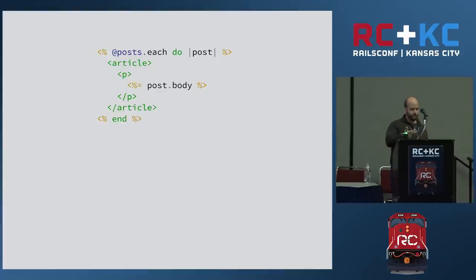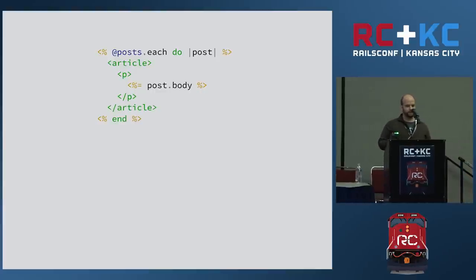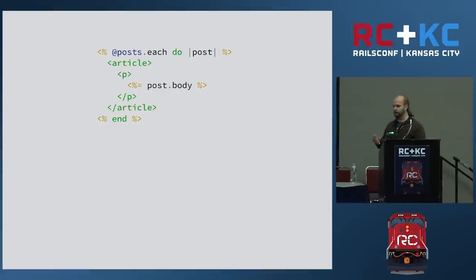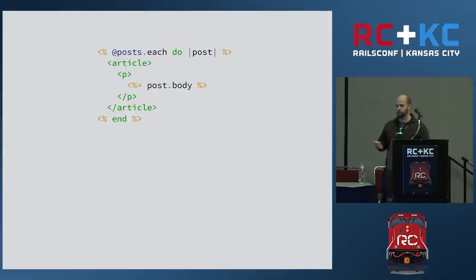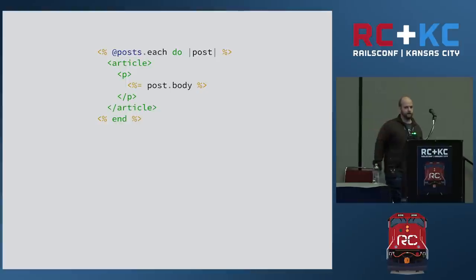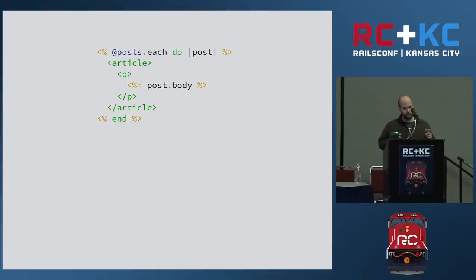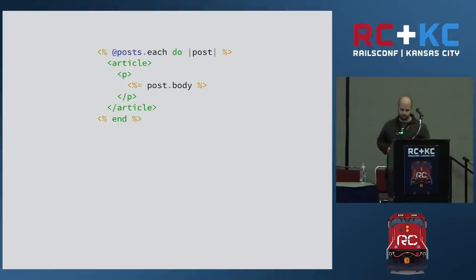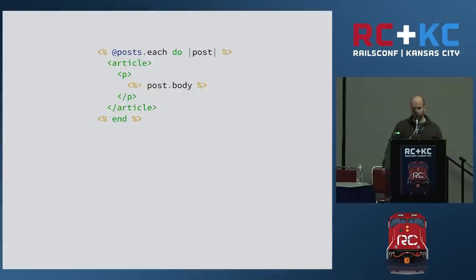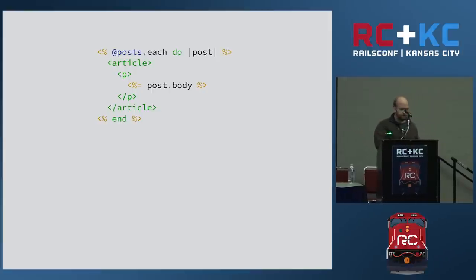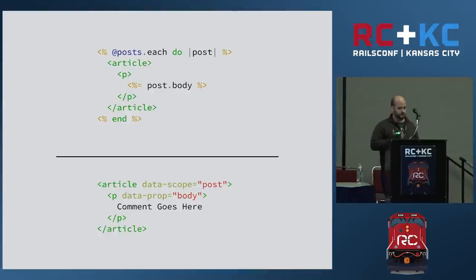The ERB template has some semantic meaning. We can see that our article tag really represents a blog post, because we're creating one for every post in our data set. And the paragraph tag represents the body because that's the value we're sticking into it. So this ERB template has semantic meaning to us, and that's lost when you build it — you end up with just HTML. You lose the semantics. So we set out to try to save this.